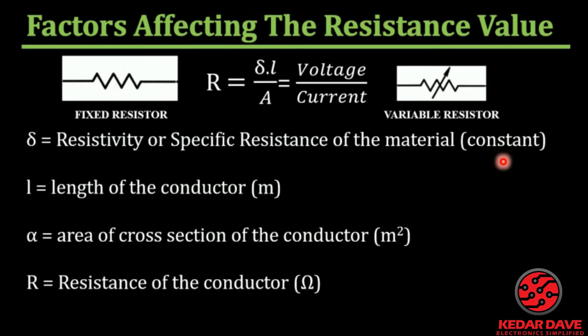Resistivity will be at a particular fixed value depending on the material. For copper and aluminum, each has its own specific resistivity value. All substances have different resistivity values which represent how much friction they offer for the flow of electrons. The fixed value of resistivity for any material can be looked up and it will be provided in example problems.